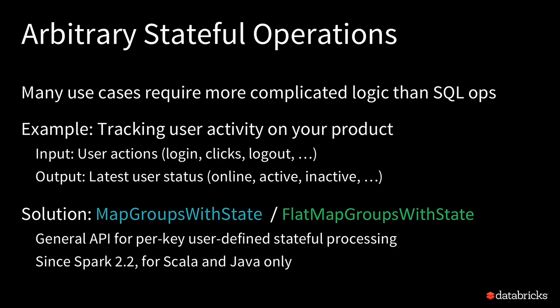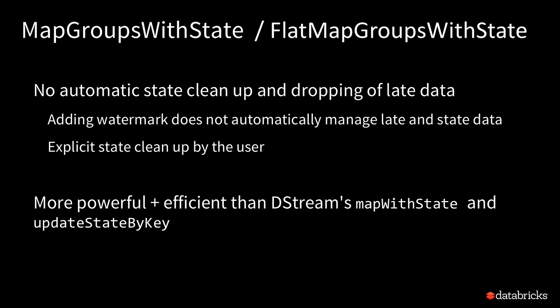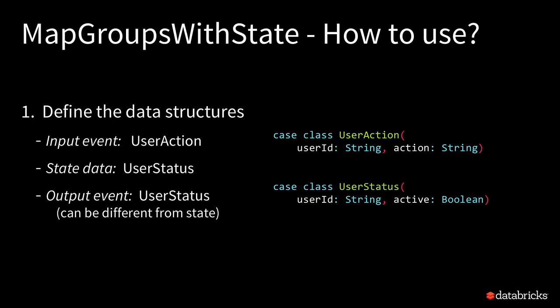The solution is mapGroupWithState, or its more general brother, flatMapGroupWithState. This was added in Spark 2.2, so it's been more than a year and a half. It's available only for Scala and Java. This falls in the category where there is no automatic state management — you have to directly control what goes into the state and when you want to clean up the state. For those who have used the old DStream Spark Streaming, this is a far more powerful and efficient version of mapWithState and updateState.